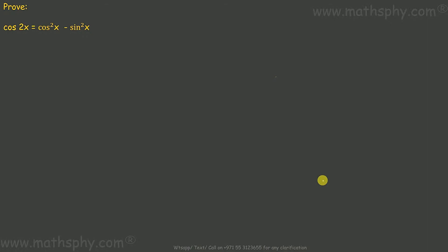We need to prove that cos(2x) is equal to cos²x minus sin²x. Let's write cos(2x) as cos(x + x).